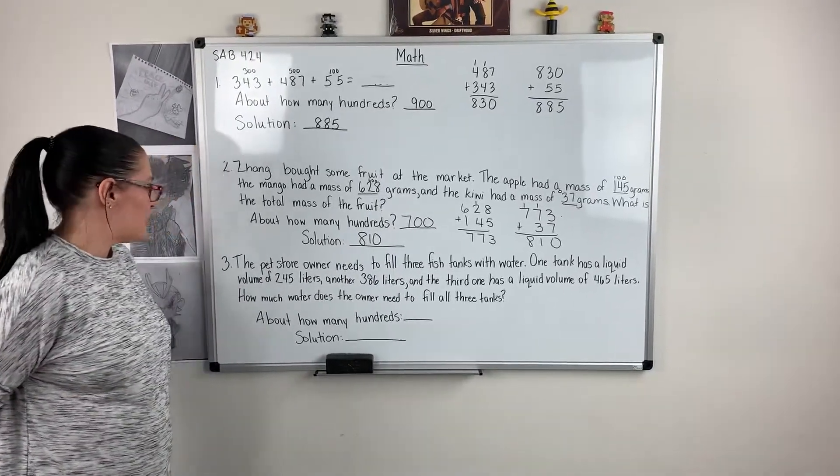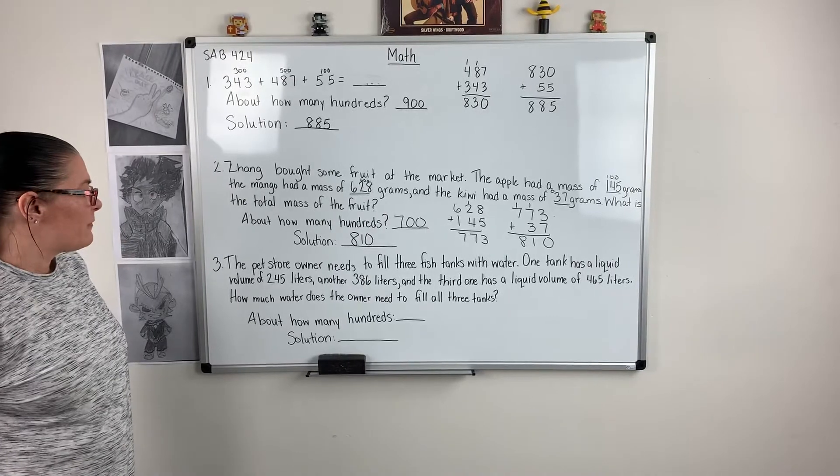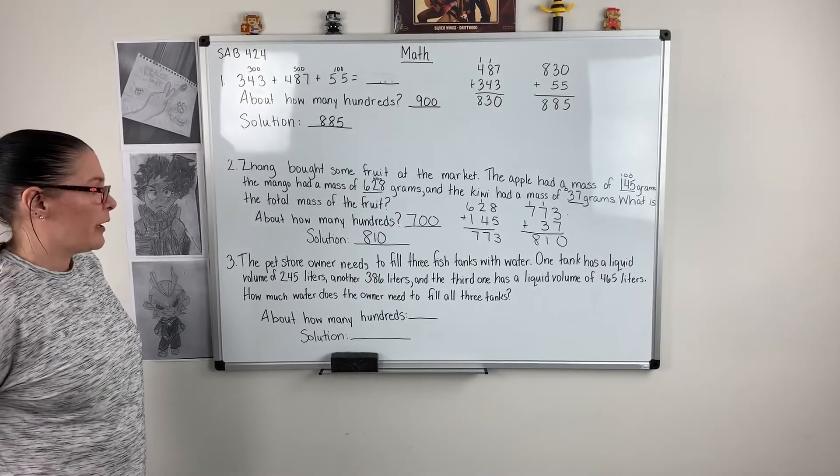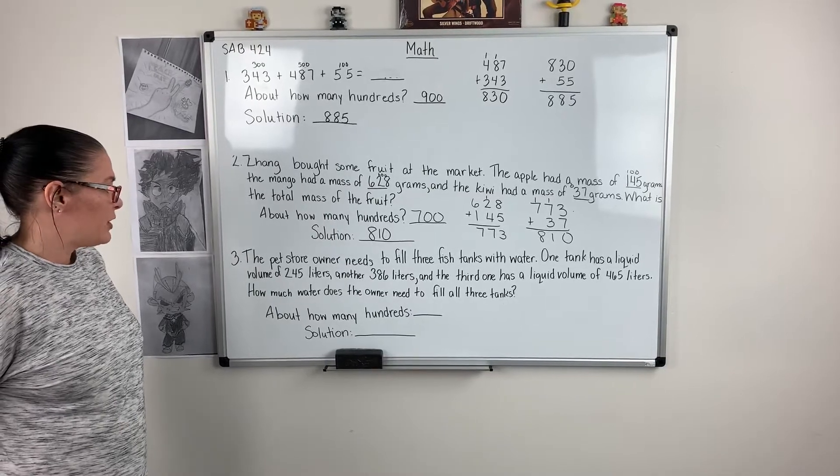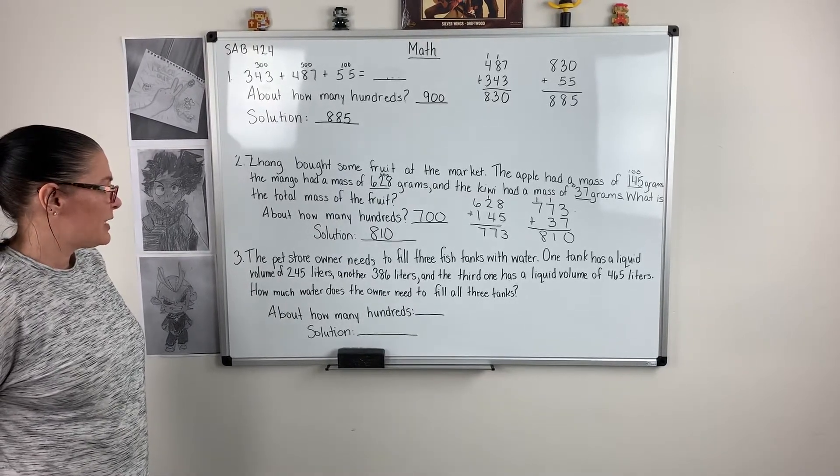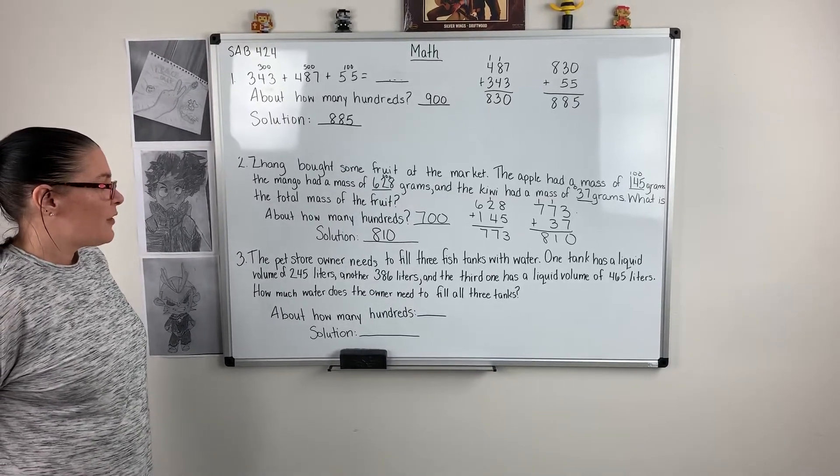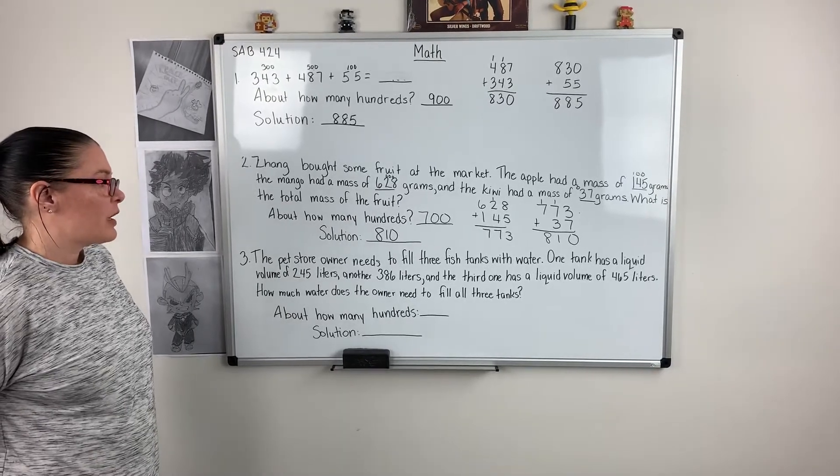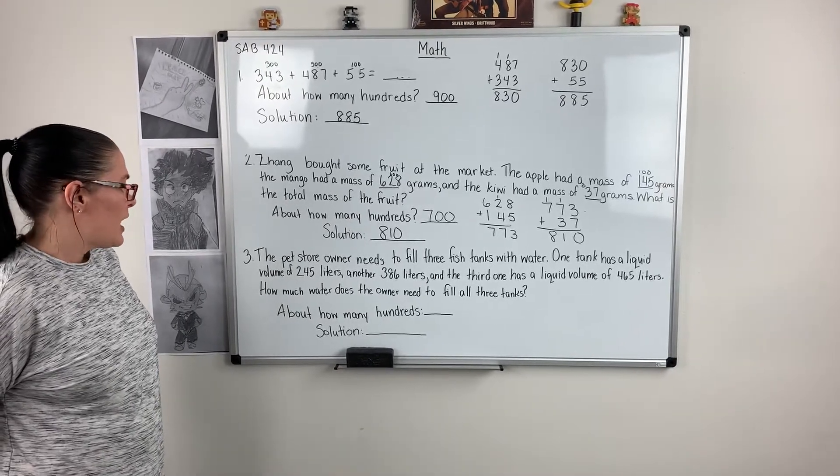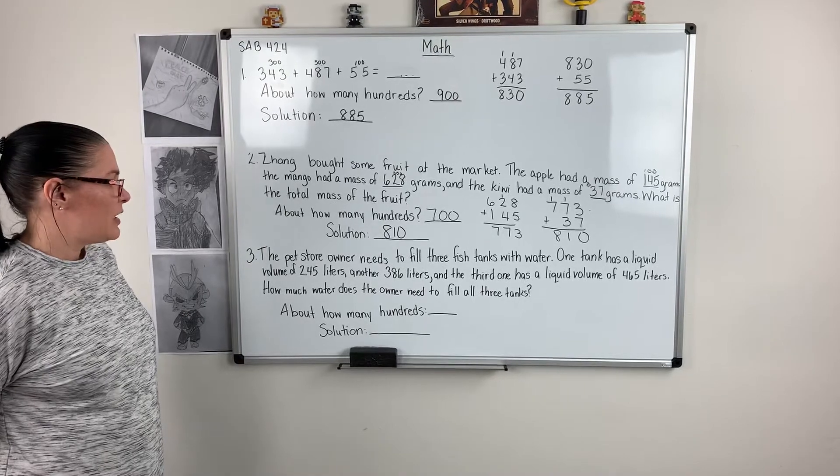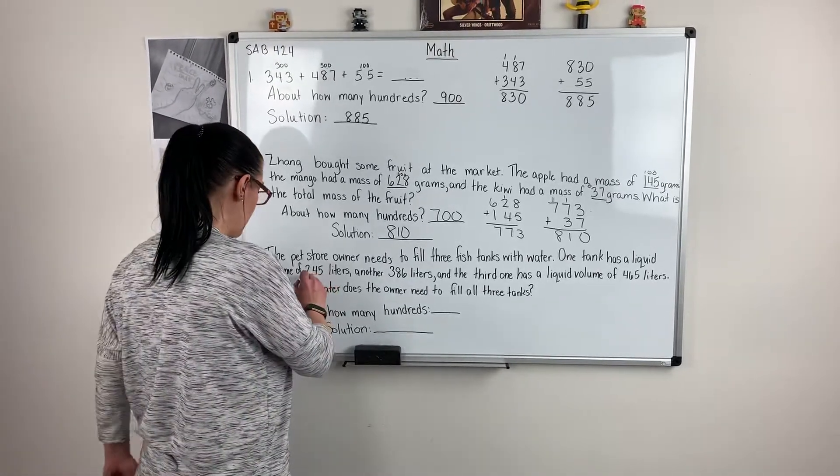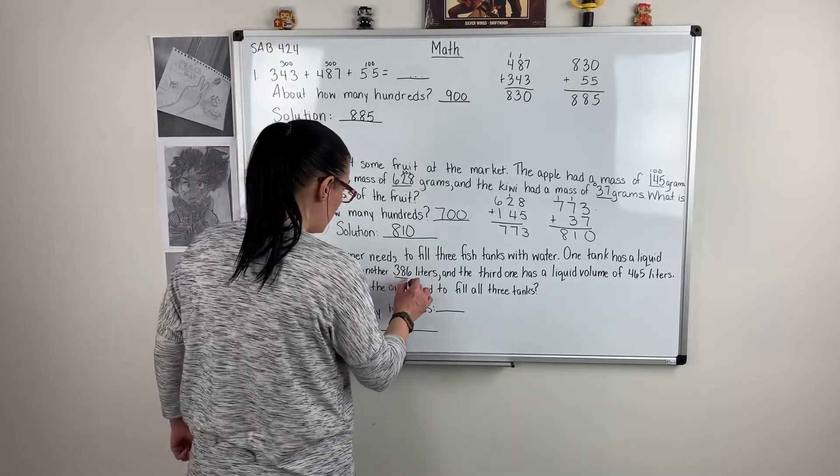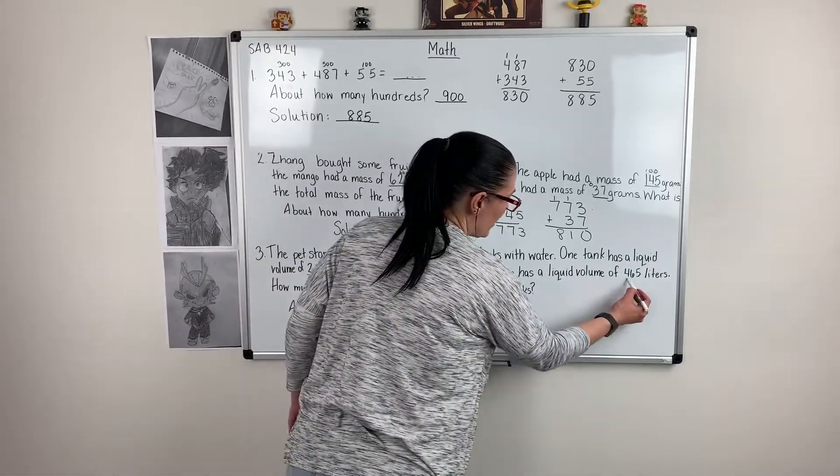Let's look at our last problem. The pet store owner needs to fill three fish tanks with water. One tank has a liquid volume of 245 liters, another of 386 liters, and the third one has a liquid volume of 465 liters. How much water does the owner need to fill all three tanks? So I see 245, 386, and 465.